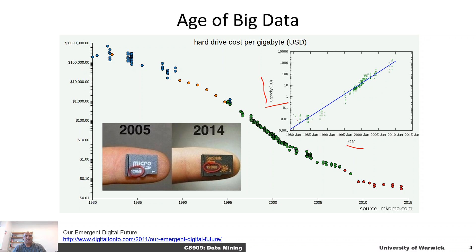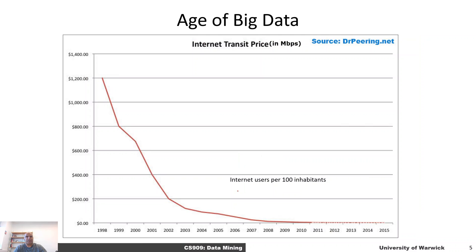As a demonstration: in 2005, we got microSD cards that stored about 128 megabytes. Now we have the same-sized cards that are able to store more than a terabyte of data in the same physical space.